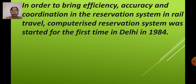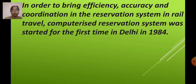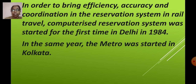To bring efficiency, accuracy, and coordination in the reservation system in rail travel, a computerized reservation system was started for the first time in Delhi in 1984, so people could avoid standing in long queues. In the same year, the metro was started in Kolkata.